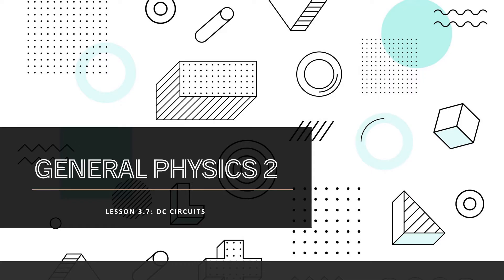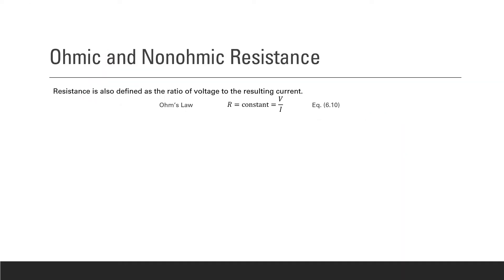Now, before we begin, we must review a very important concept in circuits — that is Ohm's Law. Let us review your junior high school science. You learned in junior high school what we call Ohm's Law. Ohm's Law suggests that voltage, resistance, and current, which are the three main variables in a circuit, are related and have a significant relationship with each other, summarized into the equation V is equal to IR.